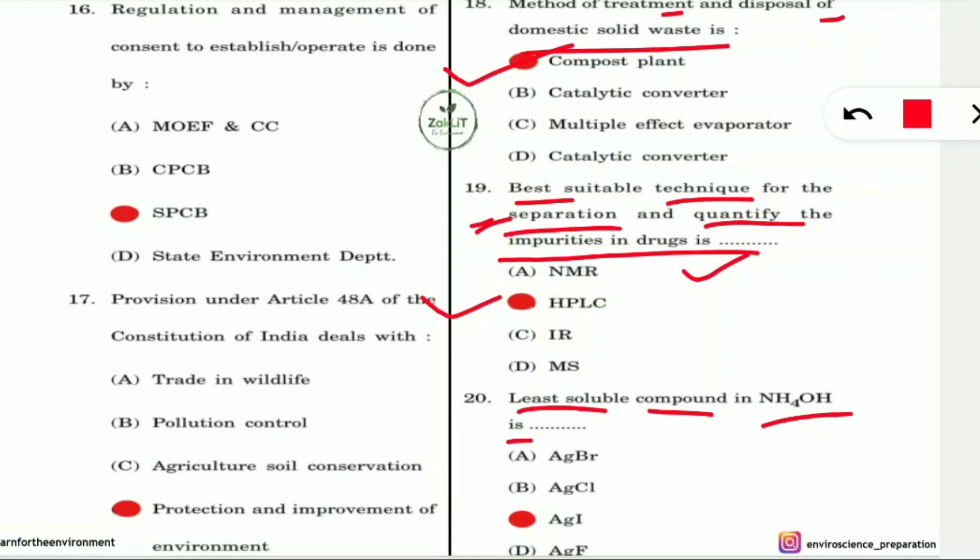Question 20: The least soluble compound in NH₄OH (ammonium hydroxide) is what? The answer is AgI — silver iodide — which is the least soluble in ammonium hydroxide.